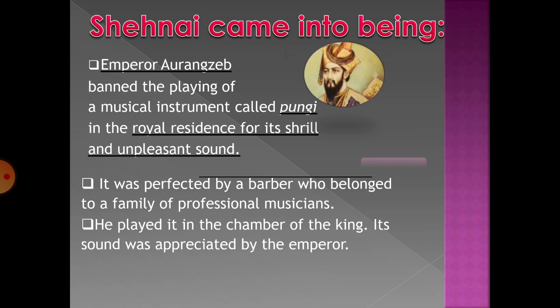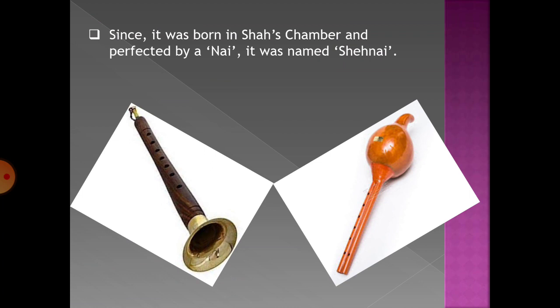Shehnai came into existence during the reign of Emperor Aurangzeb, who banned the playing of a musical instrument called pungi because it had a very shrill and unpleasant sound. Then a barber, who belonged to a family of professional musicians, perfected that instrument. It was then played in the chamber of the king, and the sound was appreciated by the emperor. It was named Shehnai because it was born in the Shah's chamber and perfected by a nai — a barber.